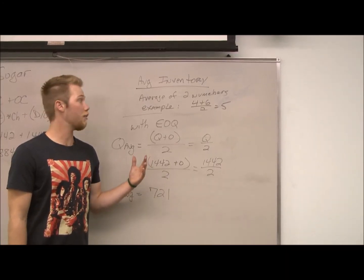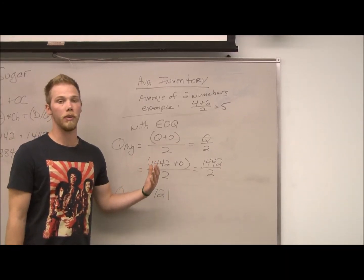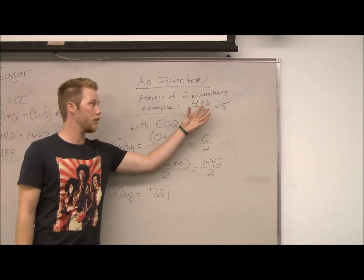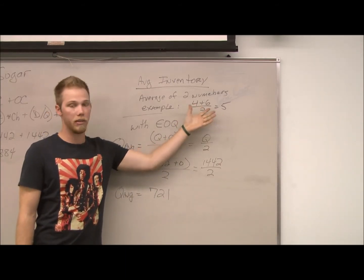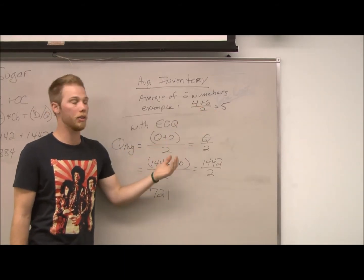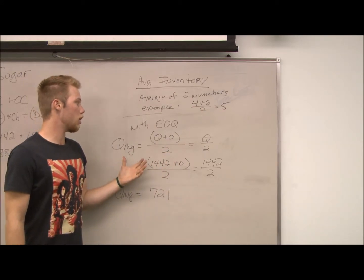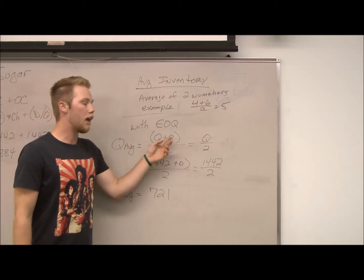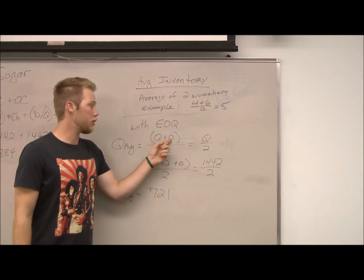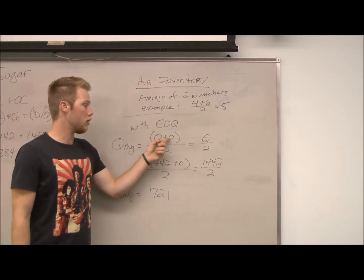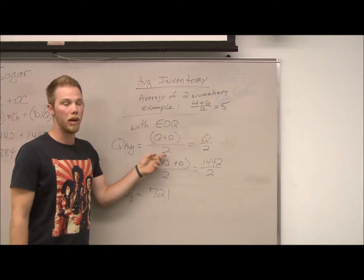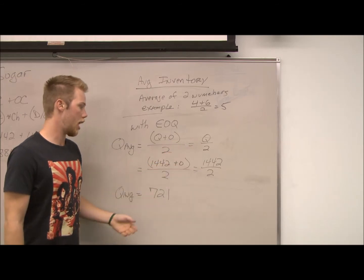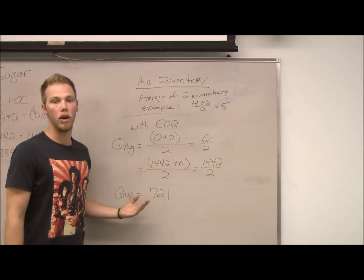To find average inventory, it's much like finding the average of any two numbers — you add them together and divide by 2. With EOQ, it's a bit more simple: we add Q from 0 and divide by 2, or just Q divided by 2, and that gives us our average quantity.